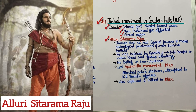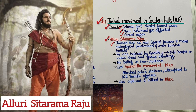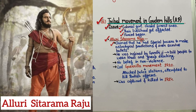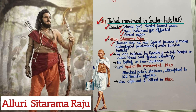They were forced to engage with the forest under special conditions. They claimed they had special rights. Sita Ram Raju was very inspired by Gandhi — he said people should wear proper clothes and give up drinking.